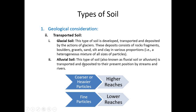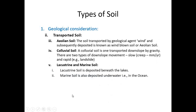Another type is aeolian soil, which is transported by wind. Another type is colluvial soil, which is transported downslope by gravity. There are two types of downslope movement: slow and rapid. Another type of transported soil is lacustrine and marine soil. Lacustrine soil is deposited underwater, and marine soil is deposited in the ocean.